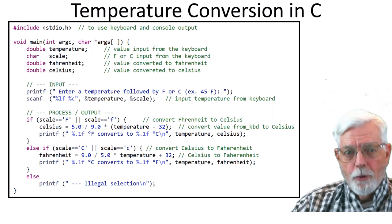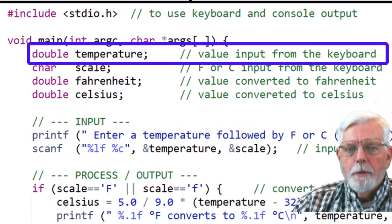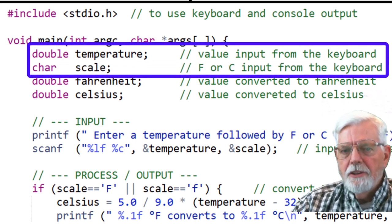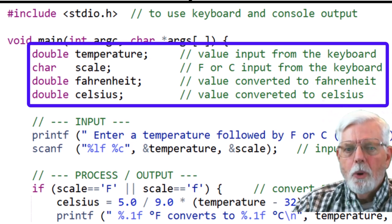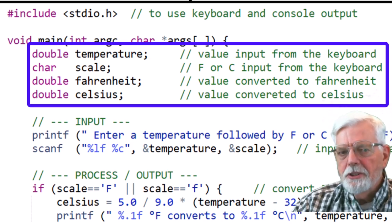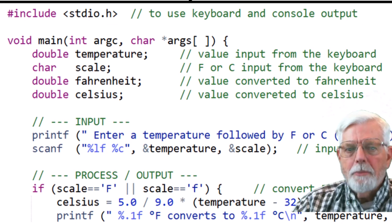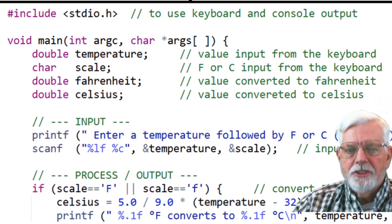Here is the full program in C. The temperature variable holds the value read from the keyboard. The scale variable holds either the F or C read from the keyboard. The temperature value will either be converted into Celsius or Fahrenheit. The program then displays both the Fahrenheit and Celsius values.